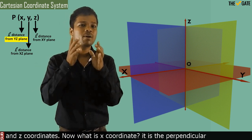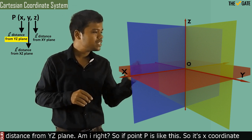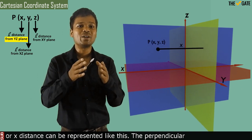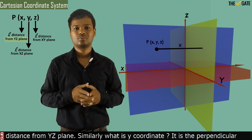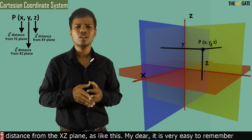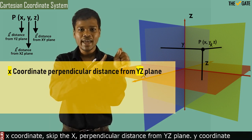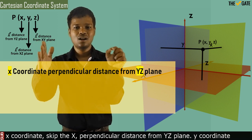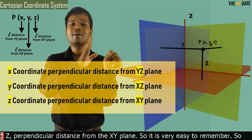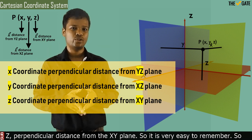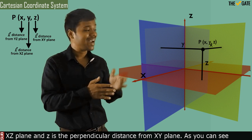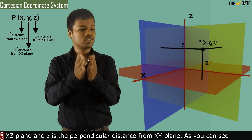The X coordinate is the perpendicular distance from the YZ plane. The Y coordinate is the perpendicular distance from the XZ plane. It is very easy to remember: for X coordinate, skip X and take the perpendicular distance from the YZ plane; for Y coordinate, skip Y and take the perpendicular distance from the XZ plane; and for Z coordinate, skip Z and take the perpendicular distance from the XY plane.